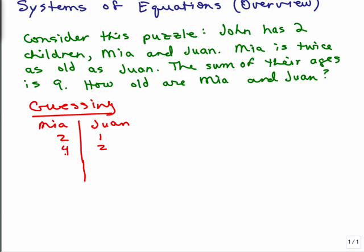How about if Juan was 2, then Mia would be 4. Well, their sum is 6. Let's see, if Juan's 3, then Mia's 6, so their sum is 9. So you could kind of get the answer right here by just trying a few possibilities.